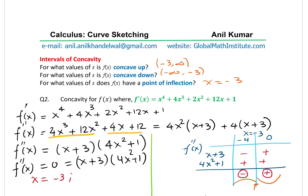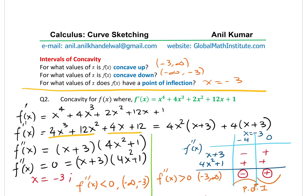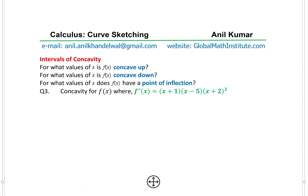To summarize question two: f''(x) < 0 on (-∞, -3), meaning concave down; f''(x) > 0 on (-3, ∞), meaning concave up; and x = -3 is the point of inflection. Now let's take the last example — question three, where we are given the second derivative directly.